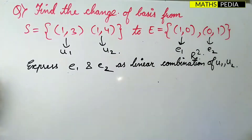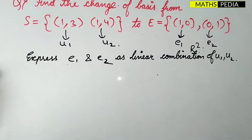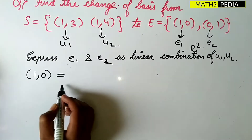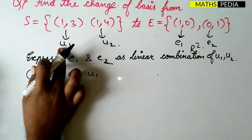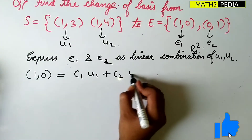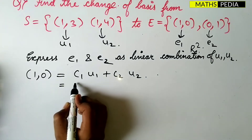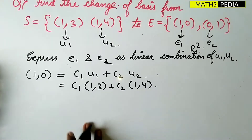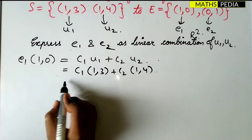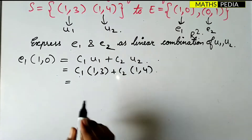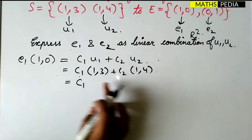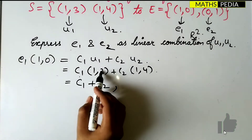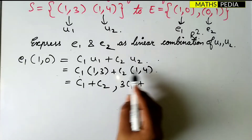I need e1 and e2 as linear combinations. e1 is given as (1, 0), so I write it in the form c1·u1 + c2·u2. u1 is (1, 3) and u2 is (1, 4). Expanding, this gives (c1 + c2, 3c1 + 4c2).